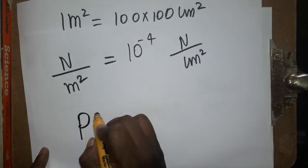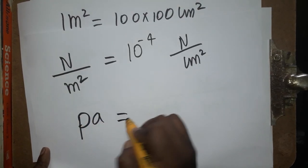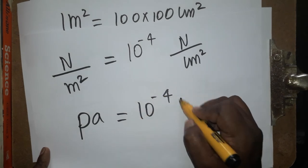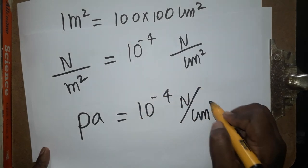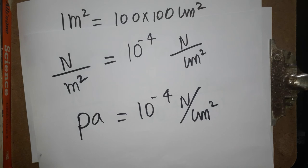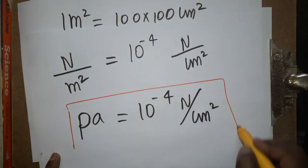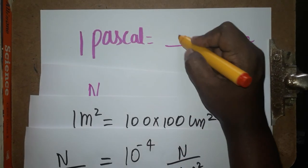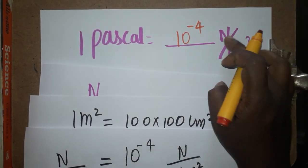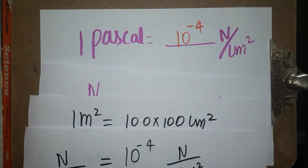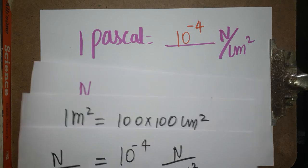That is called pascal. So finally, 1 pascal is equal to 10 to the power minus 4 newton per centimeter square. Thank you for watching.